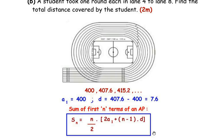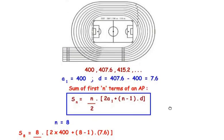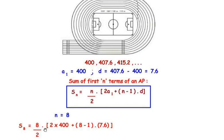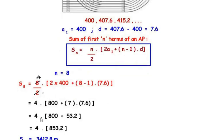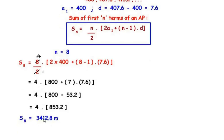Using the sum formula with n = 8: S8 = (8/2) × (2 × 400 + (8 − 1) × 7.6) = 4 × (800 + 7 × 7.6) = 4 × (800 + 53.2) = 4 × 853.2 = 3412.8 meters. So the total distance covered in all 8 lanes is 3412.8 meters.